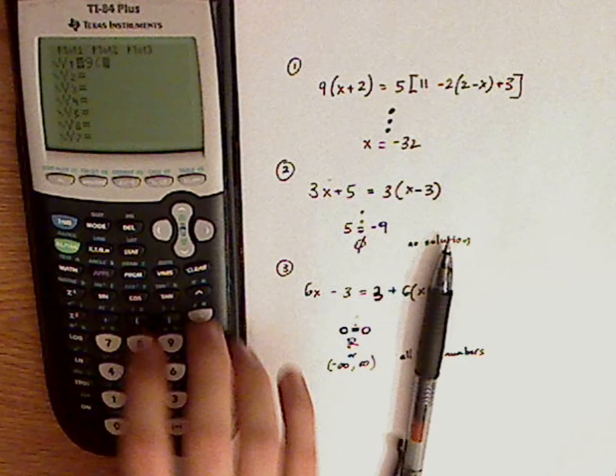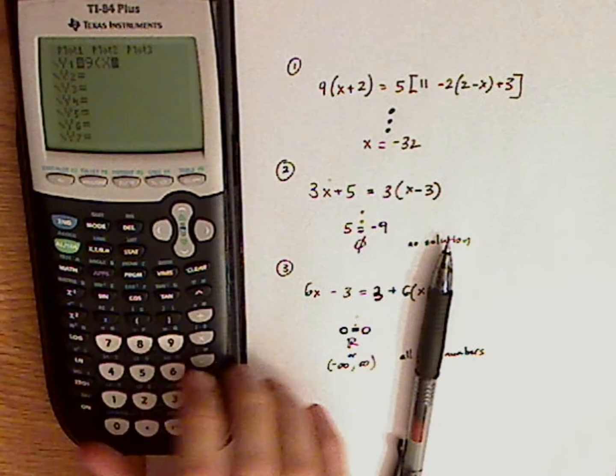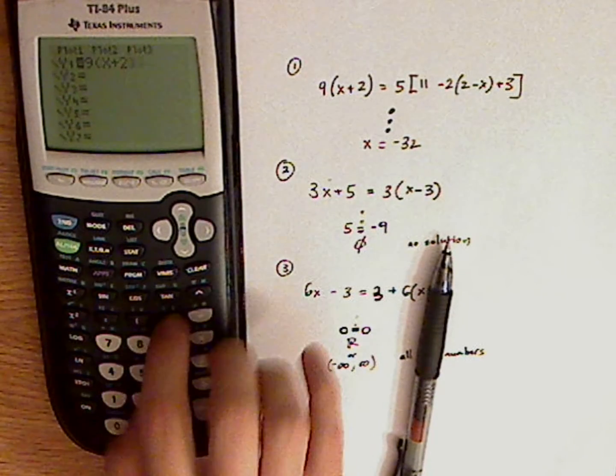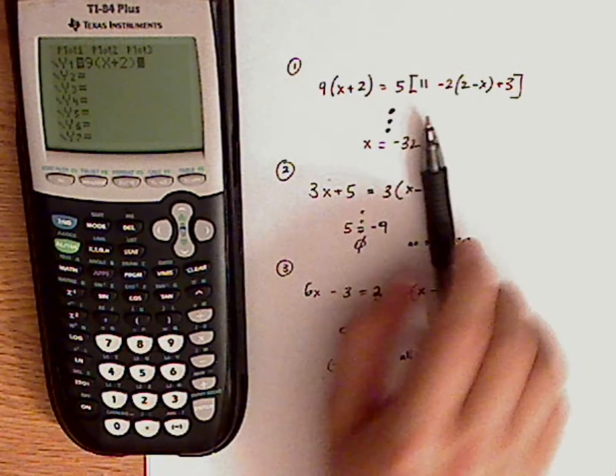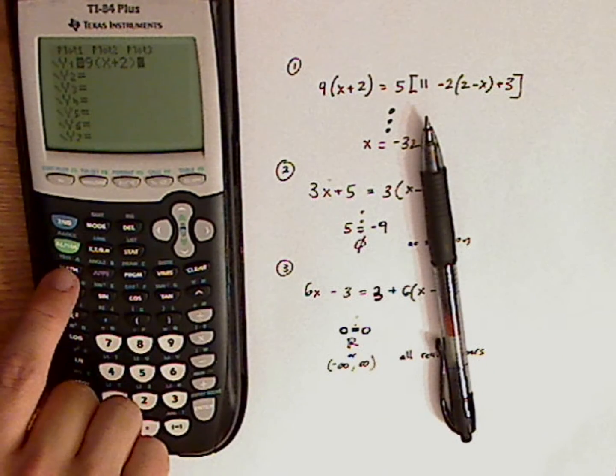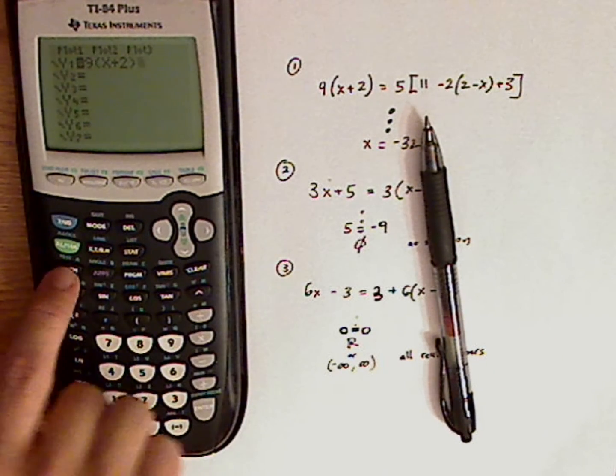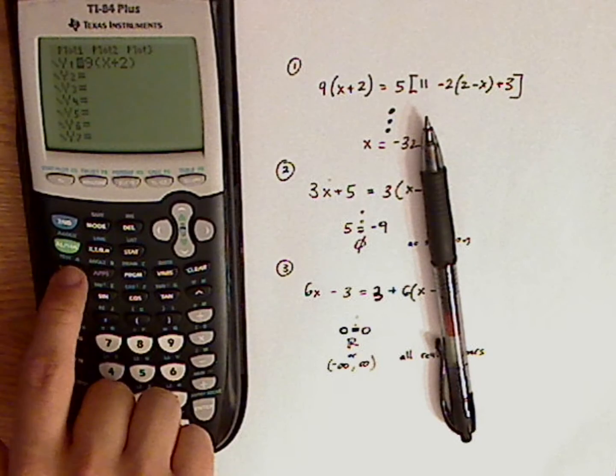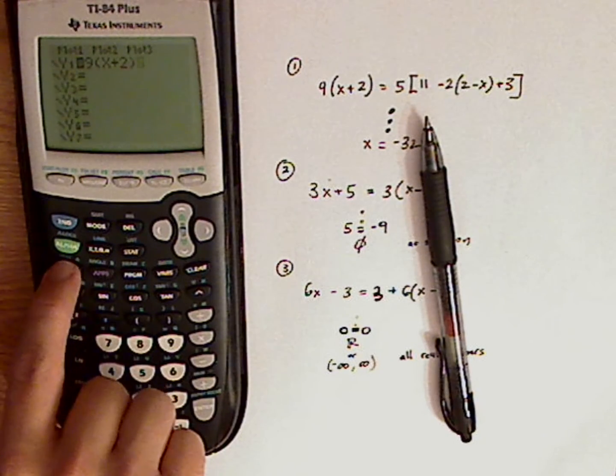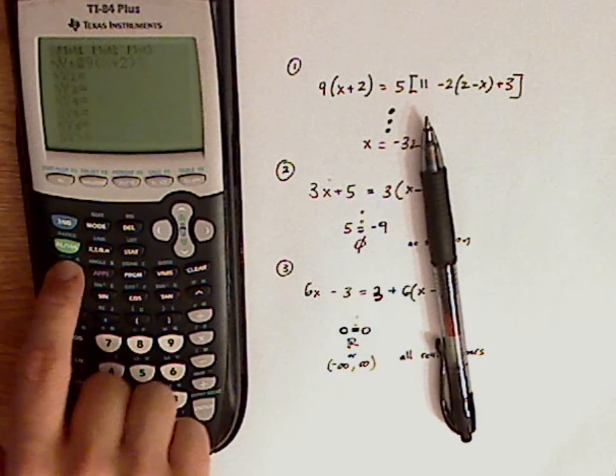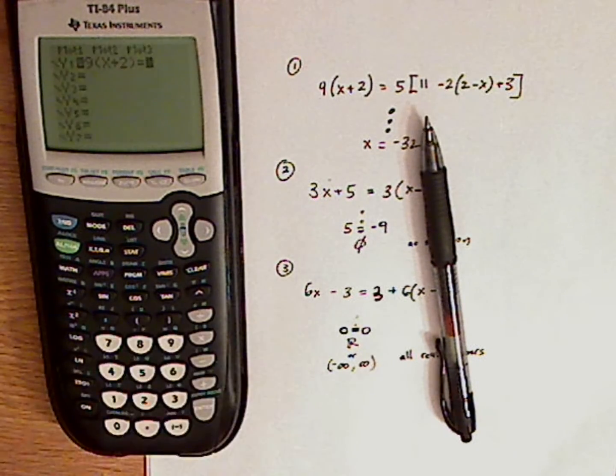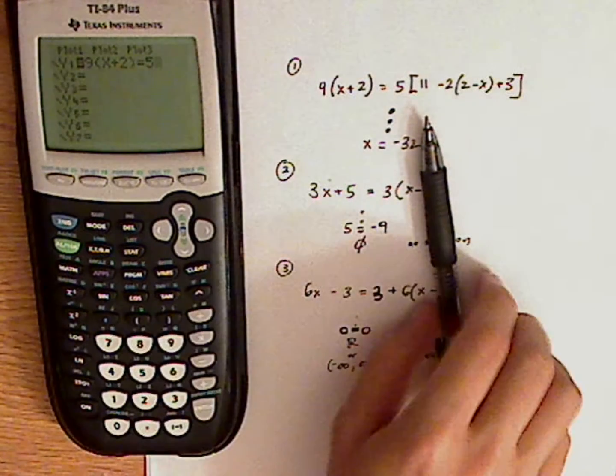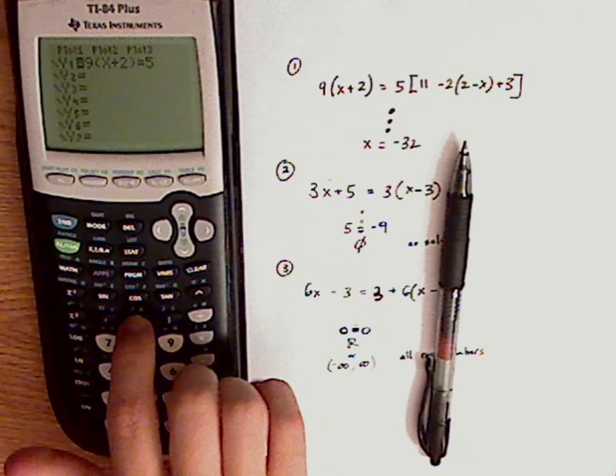y equals and I type this whole entire thing in. So 9 parentheses x plus 2 closed parentheses. Now to push an equal sign use the test feature which is right above math. You're just going to have to push second and then push the math button. You want to get to test and push equals.